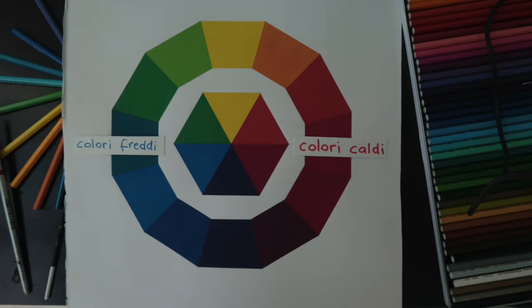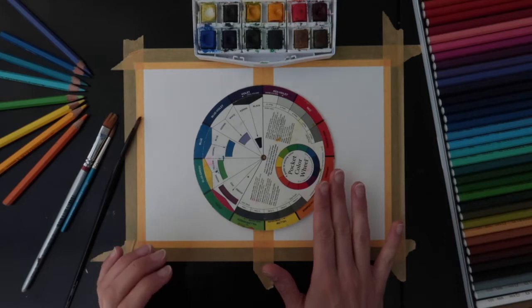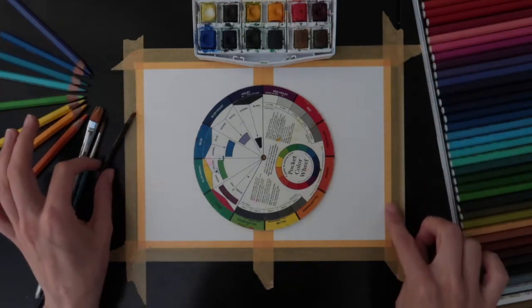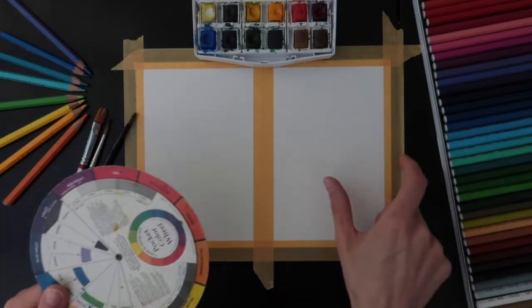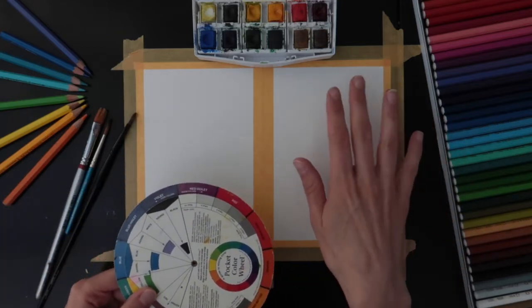So we've got the warm color on your right and the cool color on your left and we're going to try to divide our page in two parts so we can focus on both colors.